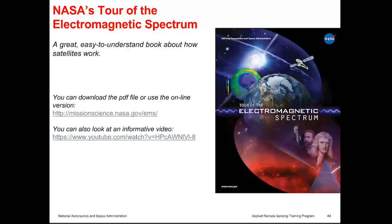Another resource is called the Tour of the Electromagnetic Spectrum, produced by NASA. It's a very easy-to-understand book made for high school students — you can download the PDF or use the online version. There is also a wonderful video you can check out. This gives you the basic fundamentals of electromagnetic radiation and how we use different wavelengths of light to observe various aspects of Earth's atmosphere, including air pollutants. This is free.